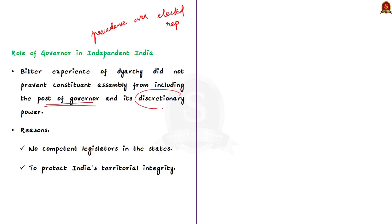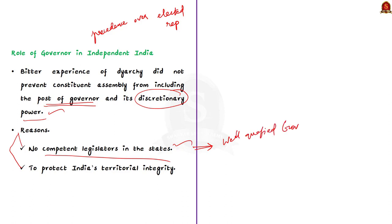The constitution makers who supported the post of governor mentioned two points in its favor. First, there were no competent legislators in the states, making it necessary for the Union government to appoint a well-qualified governor for proper functioning of the state apparatus — a point particularly relevant to the immediate post-independence period. Second, India gained independence with the bitter experience of partition and communal violence, so the constitution makers believed that some centralization was necessary for a nascent democracy like India to ensure territorial integrity and prevent further balkanization of the country.